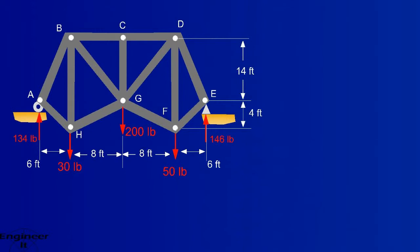So now that the reaction has been found, we can begin using method of sections. Generally, making a cut that has 3 unknowns or less is the ideal use of this method. You usually want your unknowns to be forces of interest. BC, BG, and HG will make perfect candidates to cut straight through.